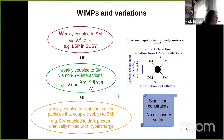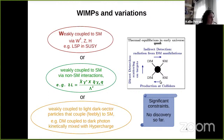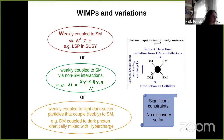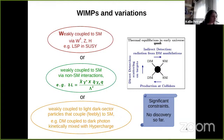Dark matter can also couple primarily and annihilate mostly into a set of light non-standard-model degrees of freedom — a dark sector — which may have very feeble couplings to the standard model. An example is dark matter coupled to a dark photon that mixes kinetically with hypercharge. This picture of thermal freeze-out has given rise to the pillars of dark matter research, where the couplings responsible for production are also responsible for signatures detectable at colliders, in direct detection experiments, and in indirect searches.